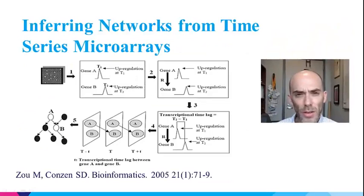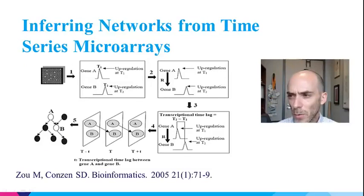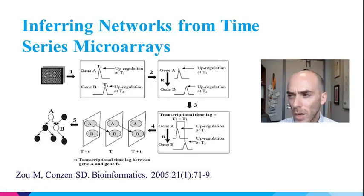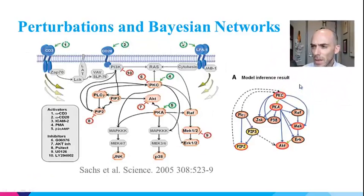You can also infer interactions directly from expression data. This is known as reverse engineering of biological pathways and networks directly from data. In this example, time series expression data is used to infer a directed and signed graph based on delayed correlation. Such signed and directed networks can also be created from large-scale multiple perturbation data.